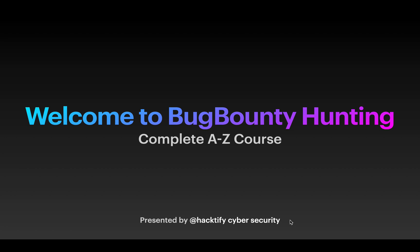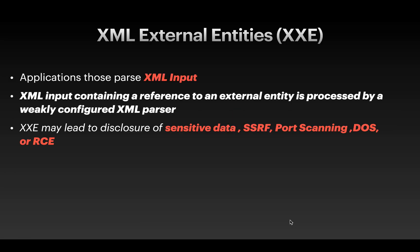The fourth vulnerability in OWASP that we are going to see right now is XXE, which stands for XML External Entities. Any application which parses XML as an input is vulnerable to an XXE attack. XML input containing a reference to an external entity, which is processed by a weakly configured XML parser, leads to XXE.